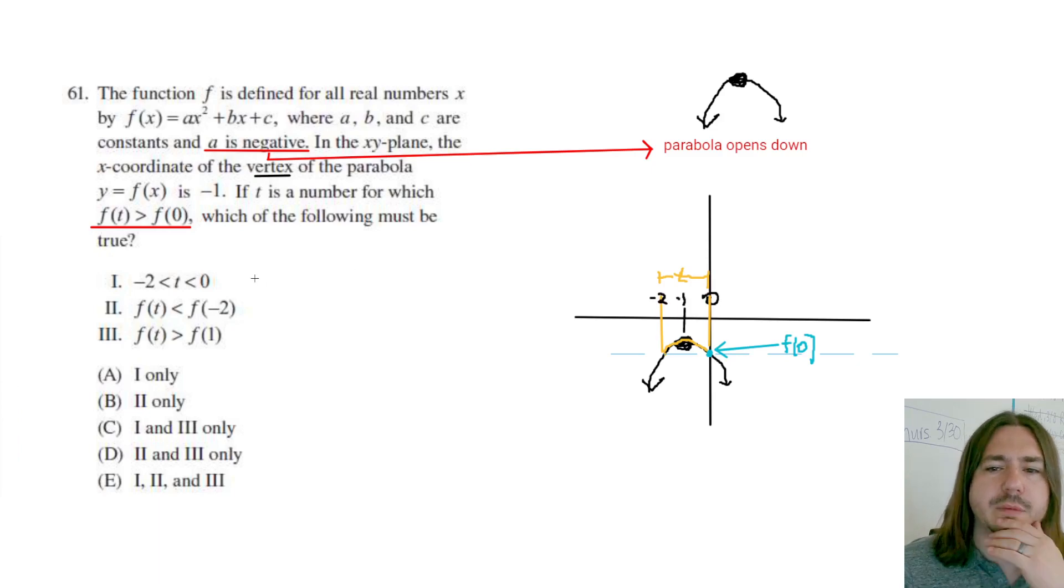So now let's start examining these items. So the first one says that t is in between negative 2 and 0. And we can see from this diagram that, yeah, that has to be true. So item number 1 here is going to be true.